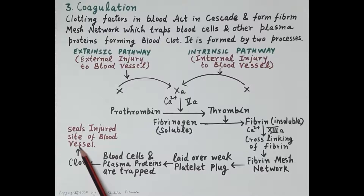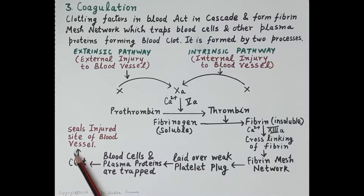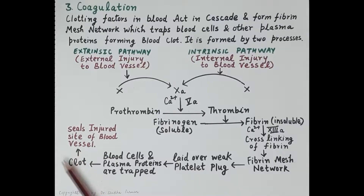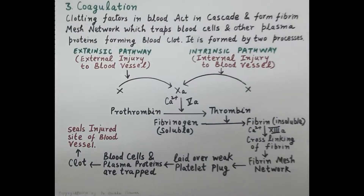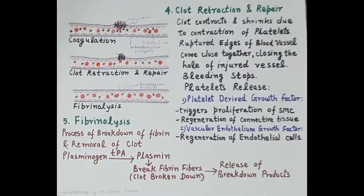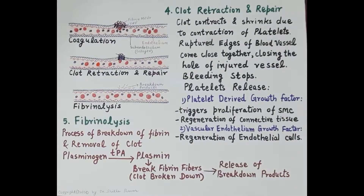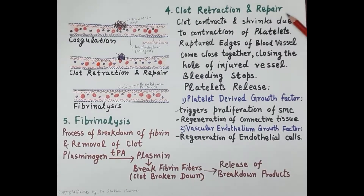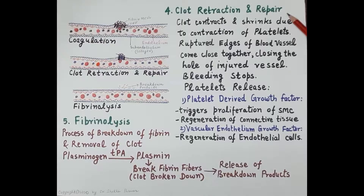This fibrin mesh network traps blood cells and other plasma proteins together with the platelet plug, and this entire structure is termed the clot. The clot seals the injured blood vessel wall and prevents further bleeding while tissue regeneration takes place. This process is termed coagulation, also known as secondary hemostasis.